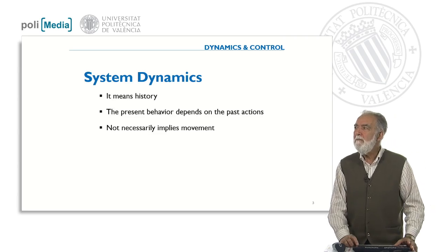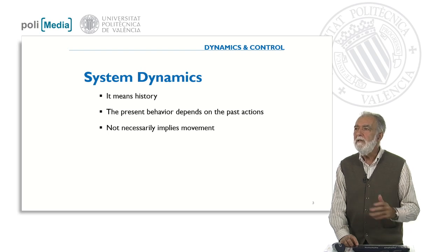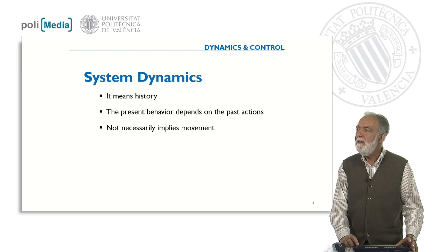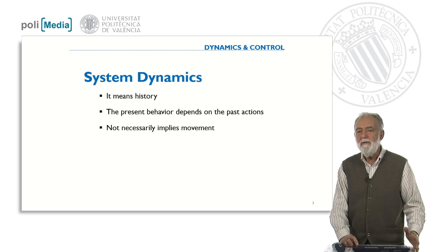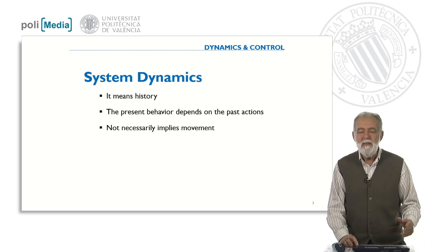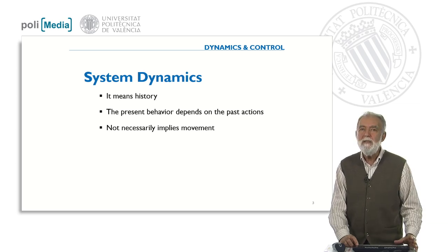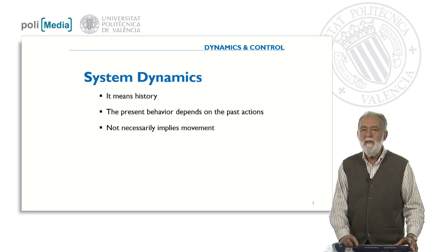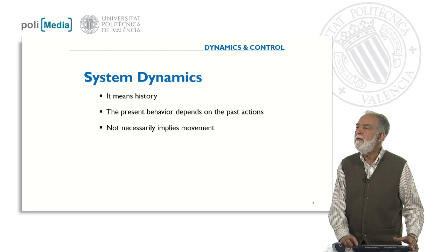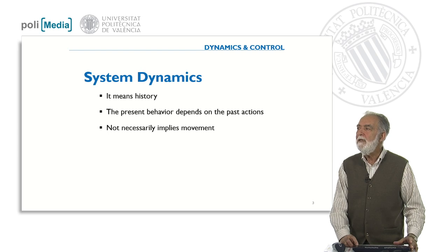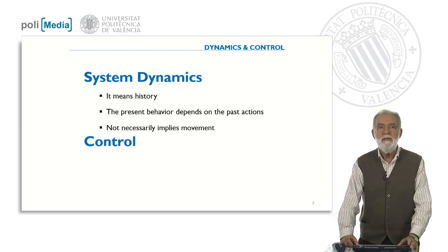Initially, dynamics means history. If something has no history, it is just static — immediate, without looking at the past. In a dynamic system, the present behavior depends on past actions, and it doesn't necessarily imply movement. For instance, consider a kiln: the temperature is changing but nothing is moving. It's a dynamic system because the temperature inside the kiln depends on the fuel or heating we have applied in the time before.